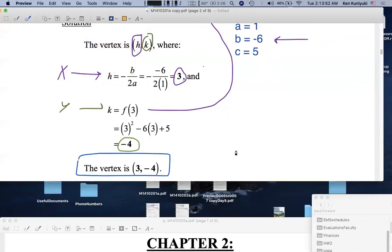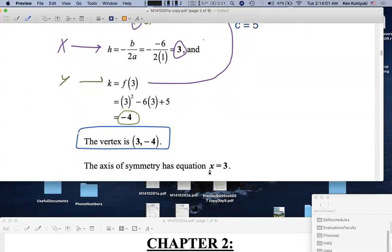And the axis is given by what equation? It's a vertical line. It's given by x equals 3. The same x-coordinate as the vertex. The axis, or axis of symmetry, has equation x equals 3.